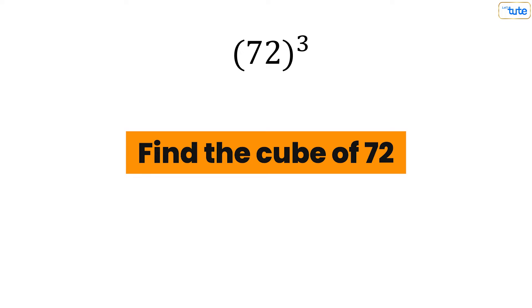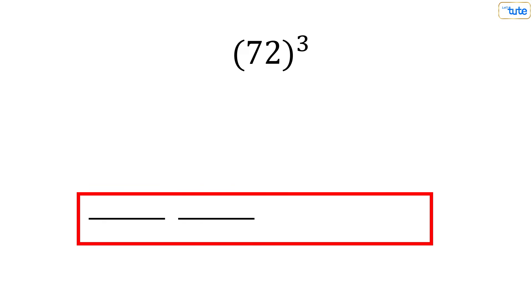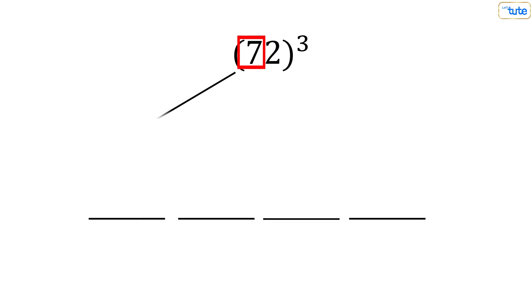Be ready with your pen and paper. I hope you remember the first step. Yes, first we make four blank spaces and write the cube of 7 over here and the cube of 2 over here. Then multiply all three digits together, which gives us 42. Now multiply this 42 by 7, which equals 294.